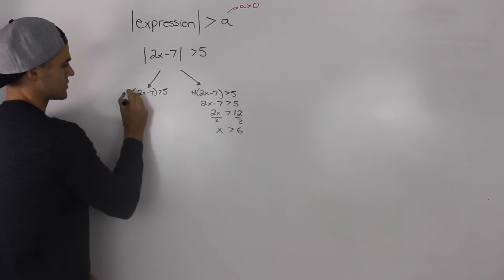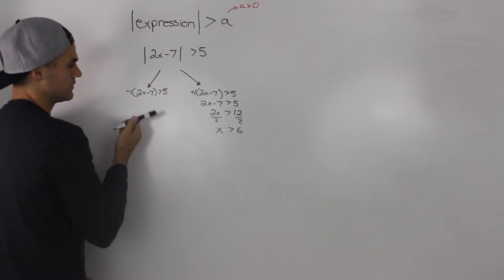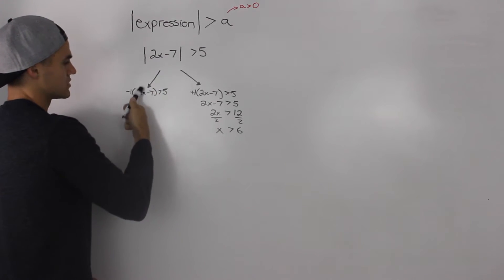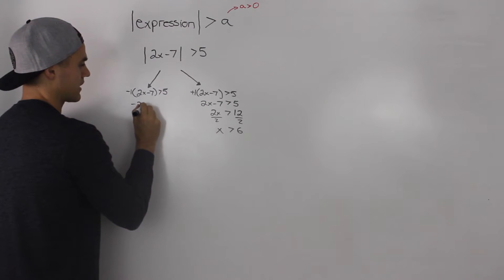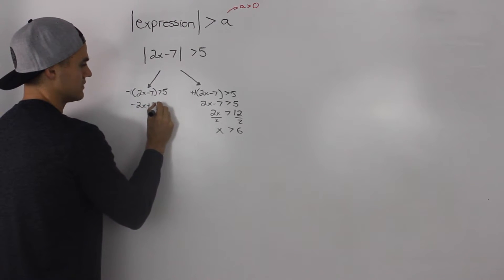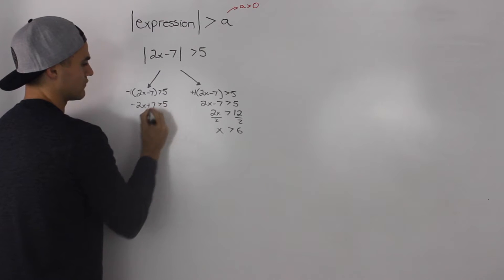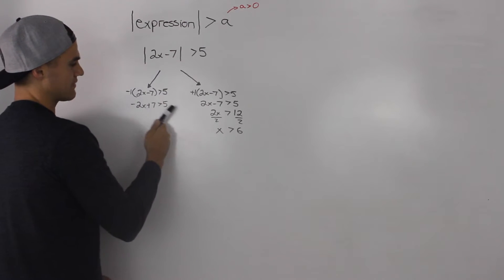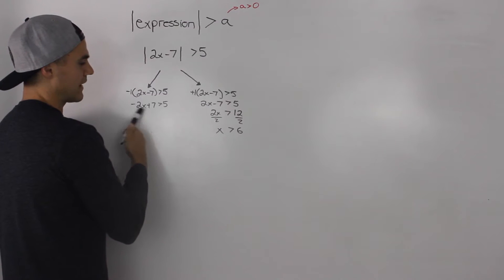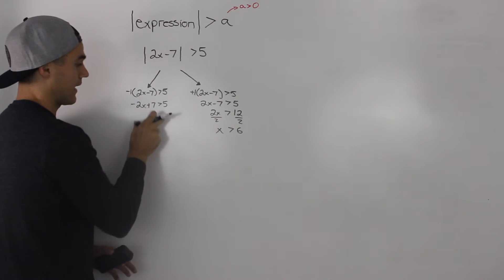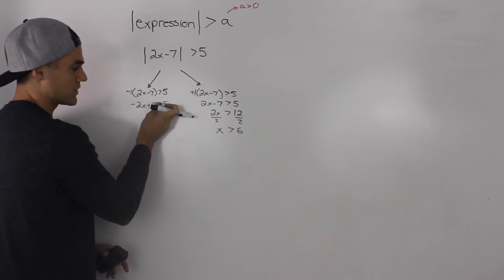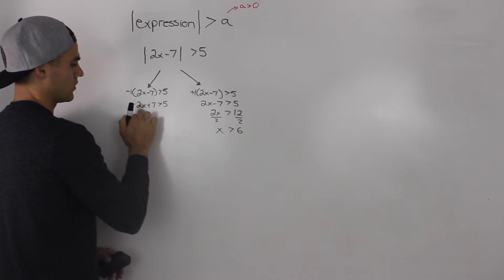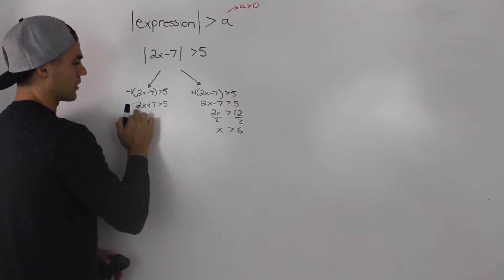For the negative case, we have negative 1 in front of the expression, so we distribute it inside. We'd have negative 2x plus 7 is greater than 5. Now there are a couple of things you can do. You can bring the 7 over and divide both sides by negative 2, but when you divide an inequality by a negative, you have to flip the sign.